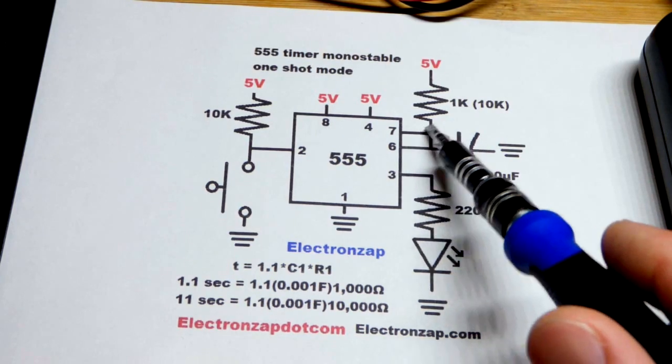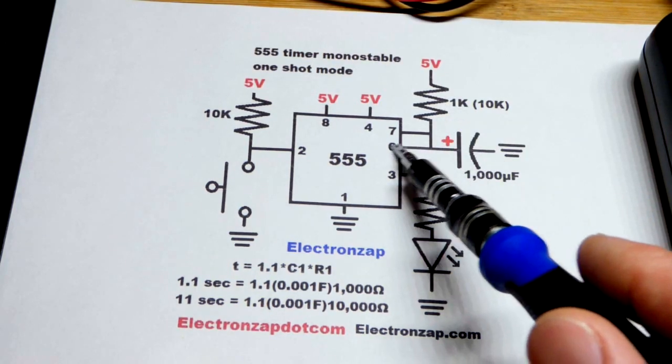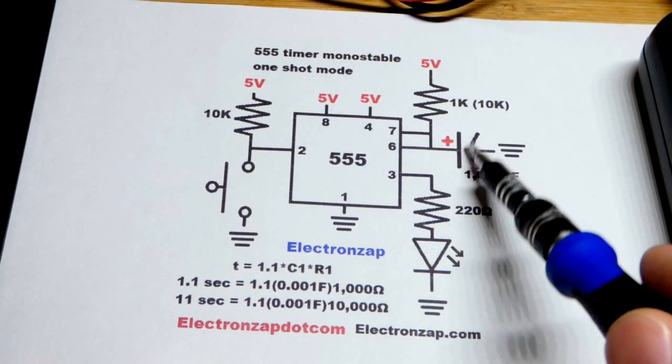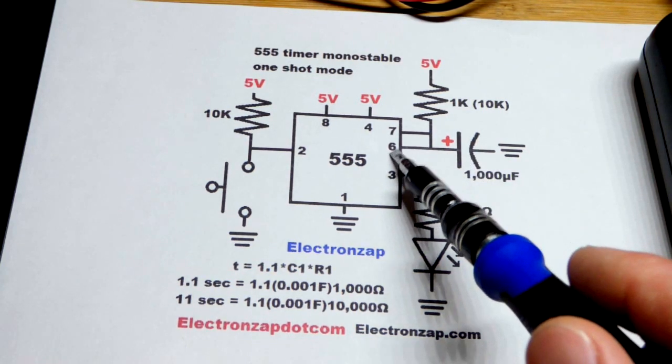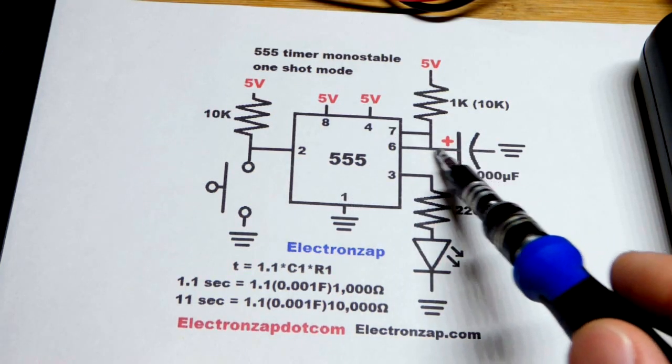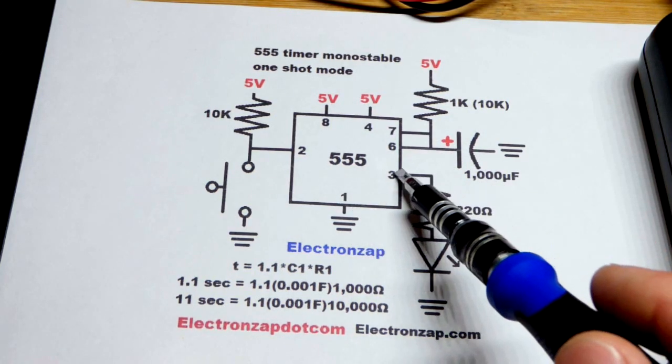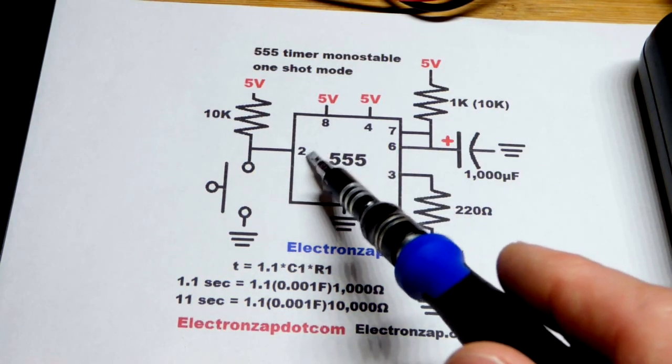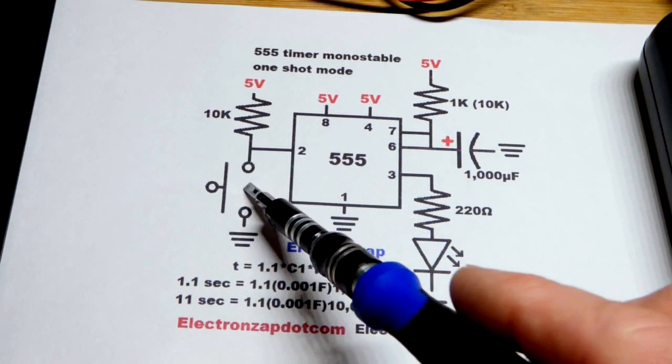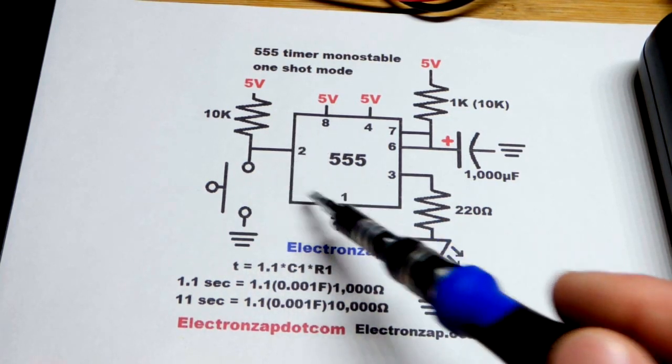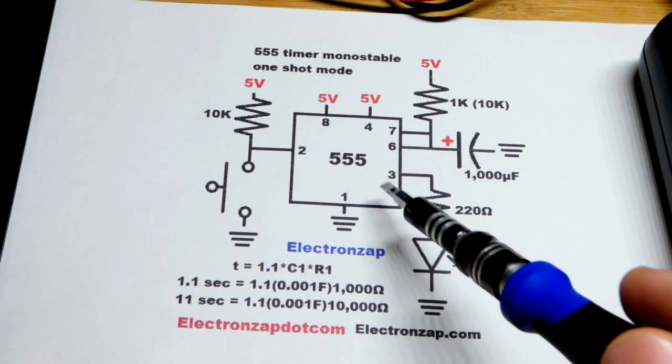The output's high, the capacitor is charging. Pin 6 is just monitoring that voltage. Pin 7's like an open switch. We get to two-thirds of the supply voltage, pin 6 says to start discharging. That's a direct connection, it instantly discharges, and the output goes low. Then it stays in that condition until pin 2 gets another low signal of 0 volts and starts the whole process over again.